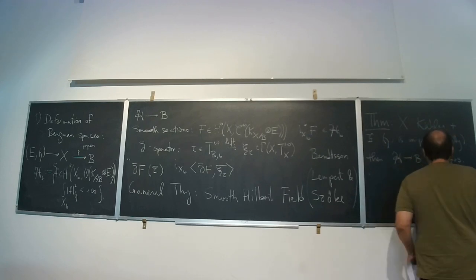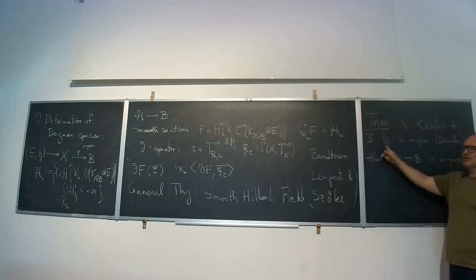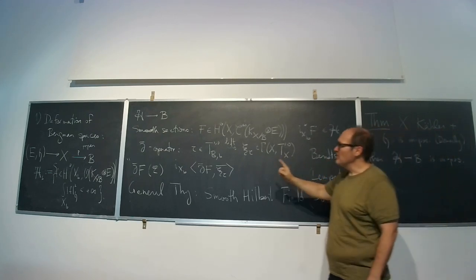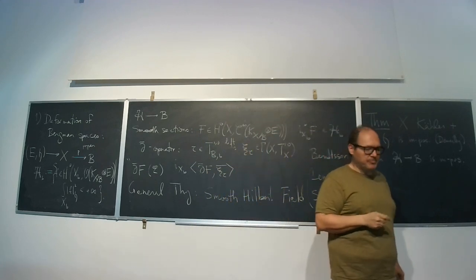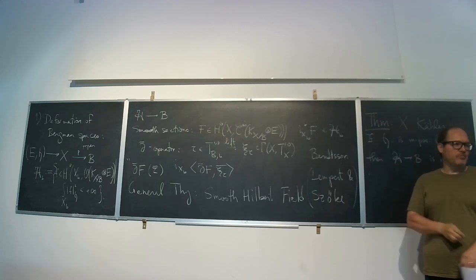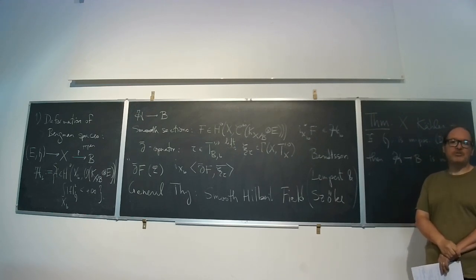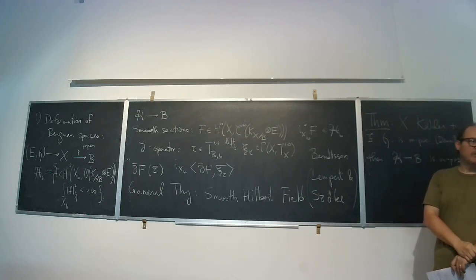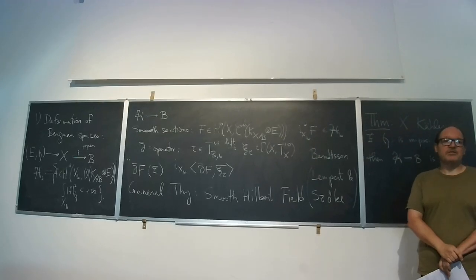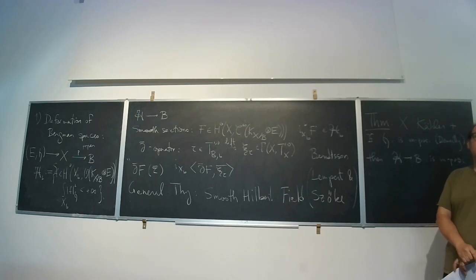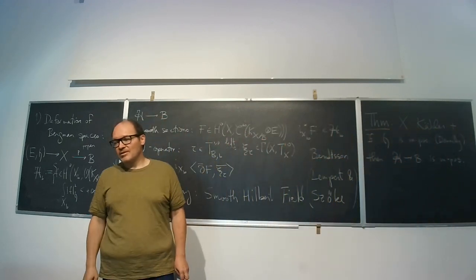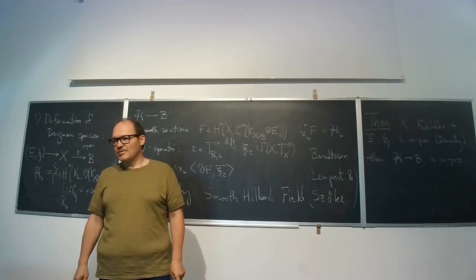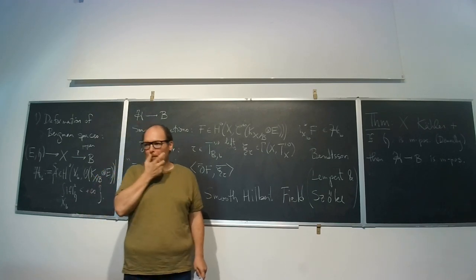One thing to note is that m-positivity of h implies local triviality of the family unless m is greater than the minimum of the rank and the fiber dimension. In that case, the Ohsawa-Takegoshi theorem tells you that any local section has an extension to some neighborhood. But in general I don't know if such an extension exists — unless E is a line bundle, in which case m-positivity is just one-positivity and also Nakano positivity. So this is in some sense a generalization.